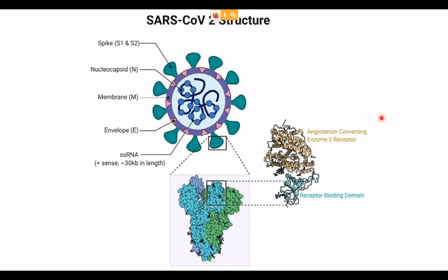The virus binds to the ACE2 receptor and initiates pathogenesis. At the molecular level, the virus is a single-stranded positive-sense RNA virus with envelope proteins — mainly the E protein, spike protein, nucleocapsid protein in the core, and membrane protein on the envelope. These are all important things you should know before going into the diagnosis of COVID-19, including the basic proteins and genetic constituents of SARS-CoV-2.